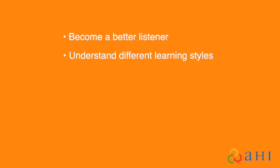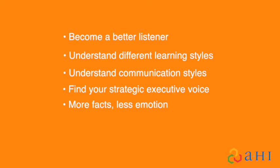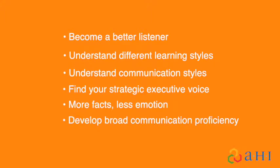Here are seven strategies to improve your interpersonal communication skills. Number one: become a better listener. Number two: understand learning styles — everyone has a different preference, whether audio, visual, or kinesthetic. Number three: understand communication styles — whether someone is direct or prefers to tell stories or incorporate pleasantries. Number four: find your strategic executive voice and style — identify how you communicate best. Number five: stick with facts and avoid incorporating too much emotion. Number six: develop the ability to connect with different types of people through many different communication platforms and technologies. Number seven: always try to help other people become a better version of themselves.